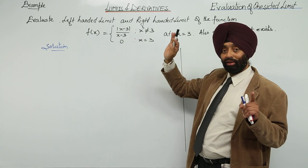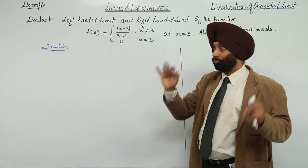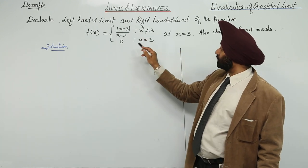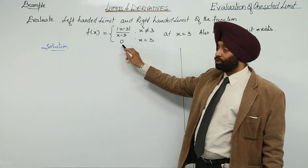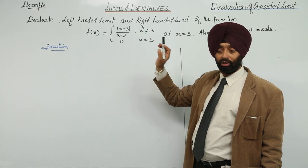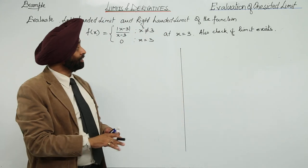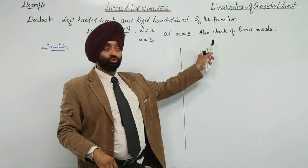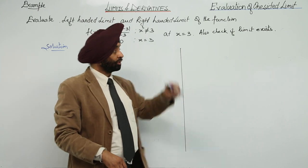This is a very important thing to keep in mind: x is not equal to 3. When x is equal to 3, then the result is 0. We will write this part at the end because we have to check whether the limit exists or not.